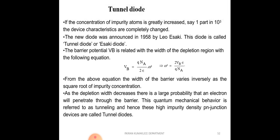This diode is especially used for oscillators. If the concentration of impurity atoms is greatly increased — say one part in 10 to the power of 3 — the device characteristics completely change. This new diode was introduced in the year 1958 by Leo Esaki. Another name for the tunnel diode is the Esaki diode.